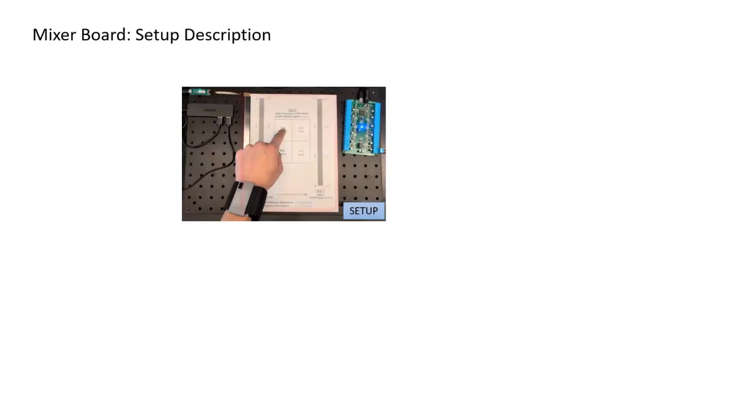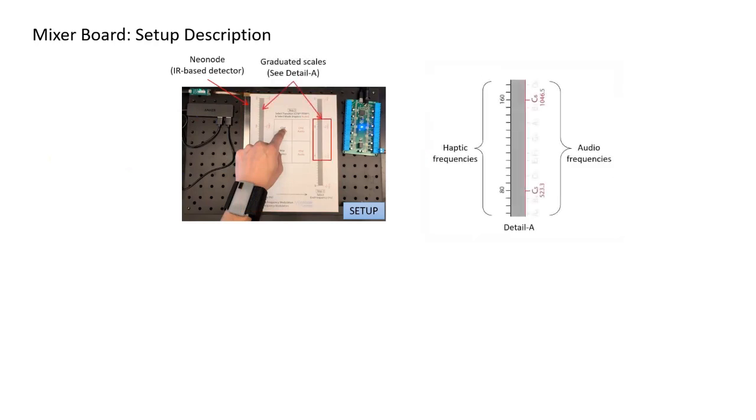The setup includes a sheet of paper made touch-sensitive using a Neo node. The printed sheet has two identical graduated scales on both sides.